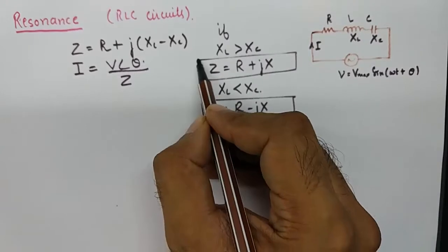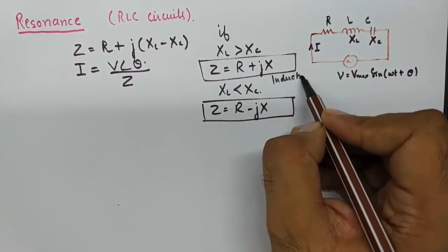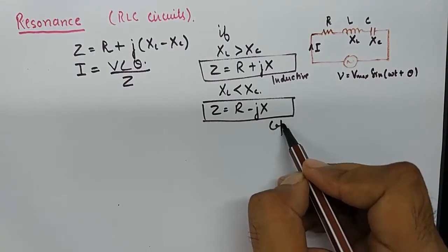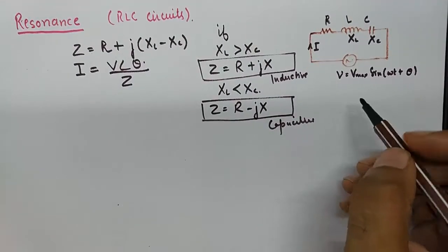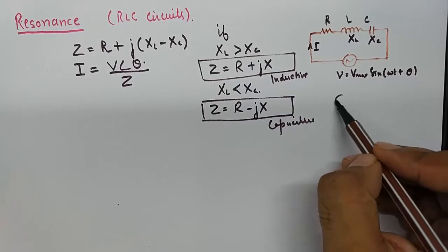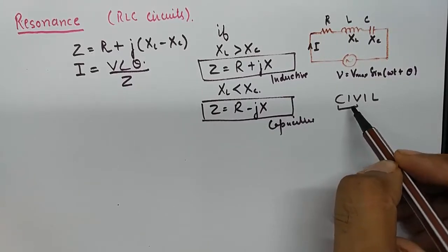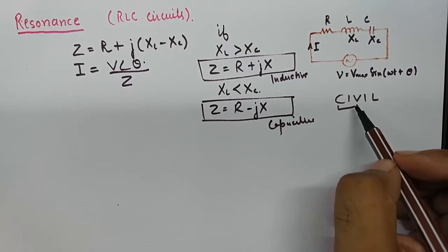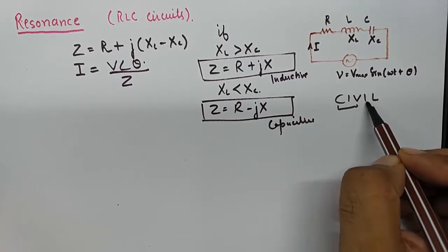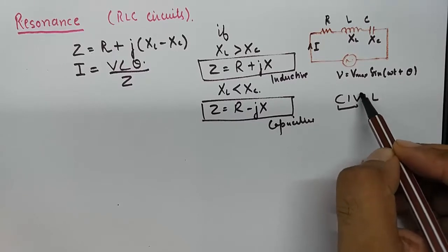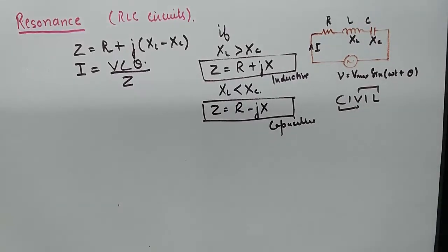So the circuit will behave like inductive in the first case, and capacitive in the second case. You can figure out from the phrase CIVIL that in capacitive circuits the current will lead the voltage, and voltage will lead the current in inductive circuits. This is what I've discussed in the previous tutorial.